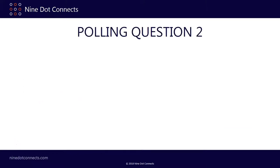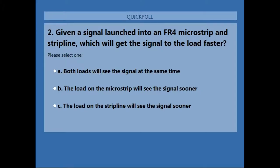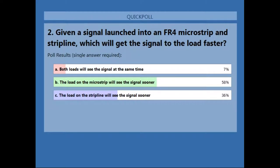Polling question two: if you were given a signal launched into FR4 at a common point in both a microstrip and a stripline, which gets the signal to the load faster? Results: 58% correctly identified the microstrip as faster. The 36% who voted for 'same speed' are going to learn something here that will help explain why that is not correct.